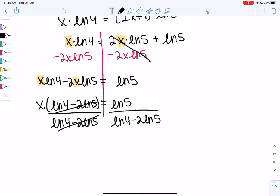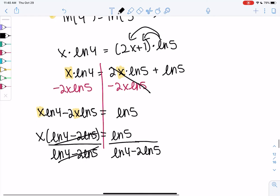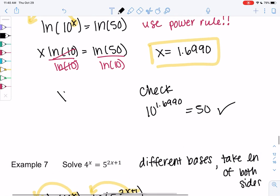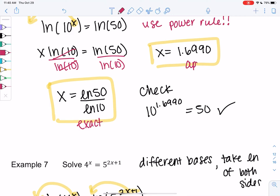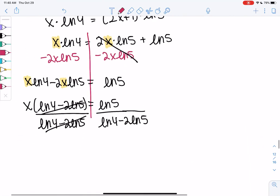And so this is the exact answer. I actually prefer exact answers. So maybe even in the last one, I would have said the exact answer is ln of 50 over ln of 10. But this is the approximate answer, the 1.6690, which is good for checking. So this is our exact answer. It's ugly, and it's fine. That's our answer. But we can approximate it as well.